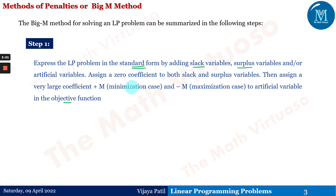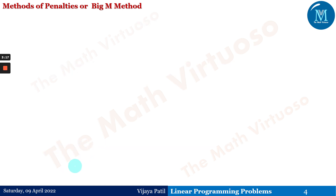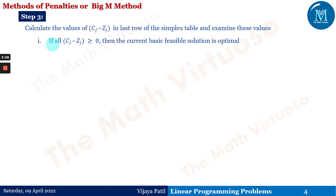Step two: obtain the initial basic feasible solution by assigning zero values to the decision variables x1, x2, x3, and so on. Step three: calculate the values of cj minus zj in the last row of the simplex table and examine these values. If all cj minus zj values are less than or equal to zero, then the current basic feasible solution is optimal.